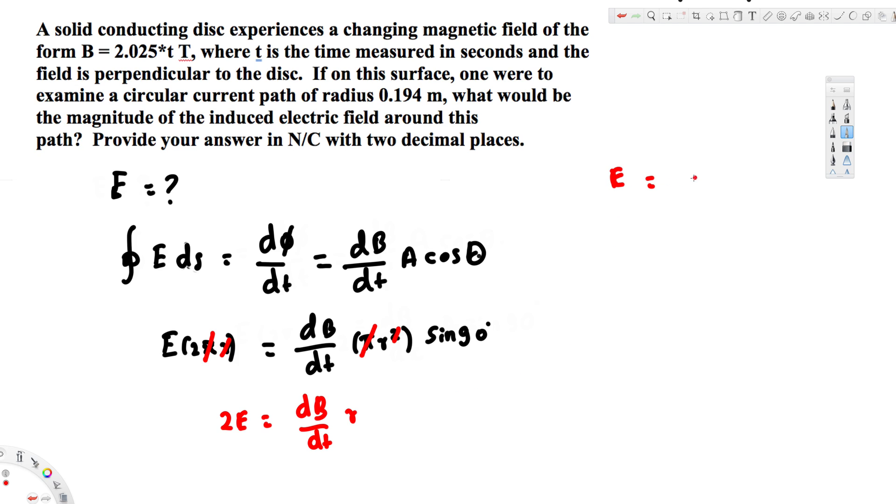Therefore, E is going to be equivalent to (dB/dt) times r divided by 2. I brought this 2 to the other side. Now dB/dt here, we're taking the derivative of this magnetic field with respect to t.